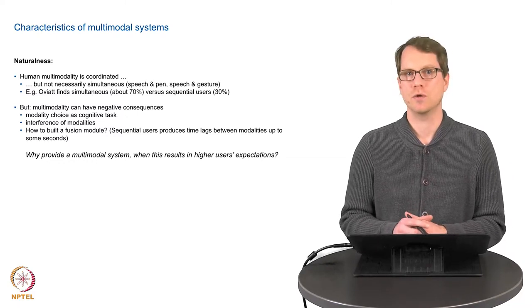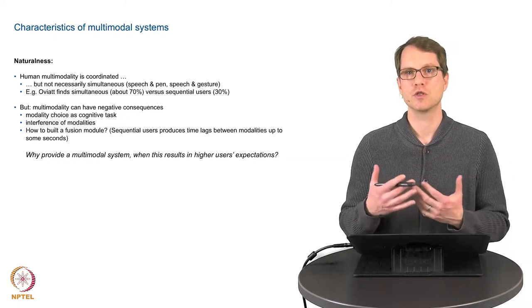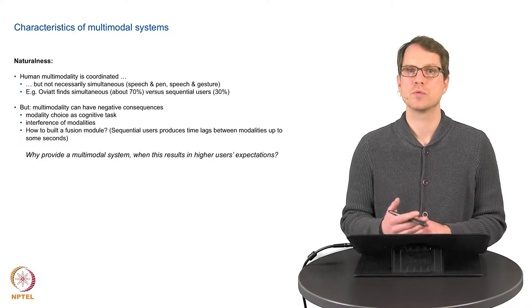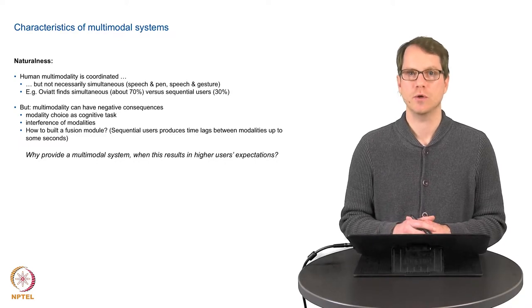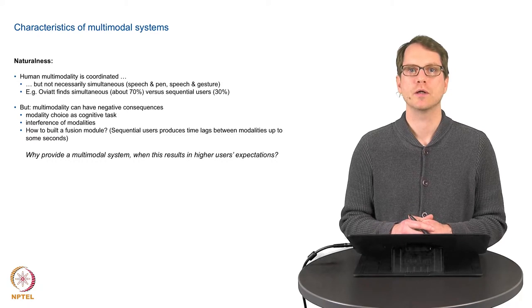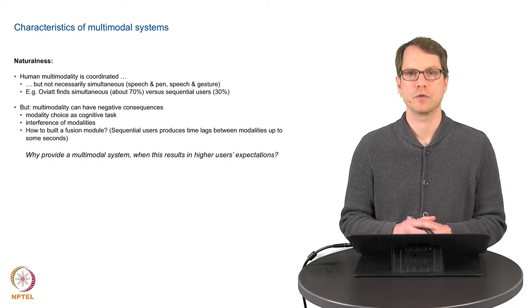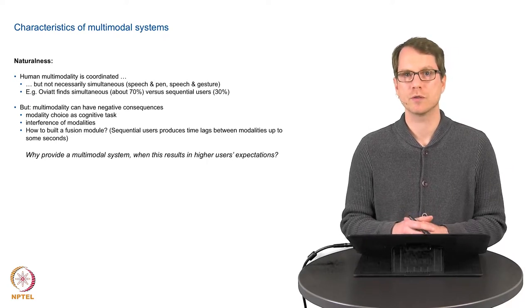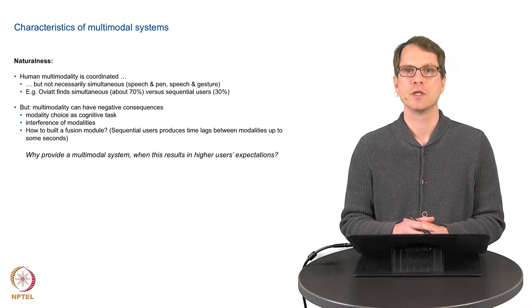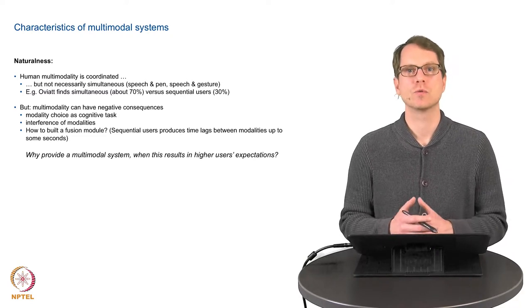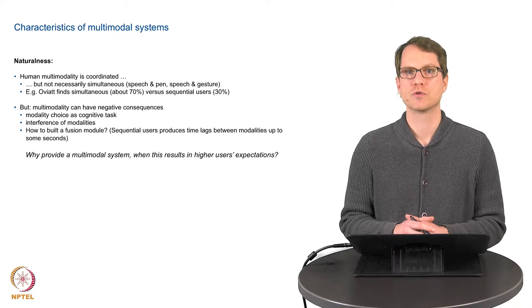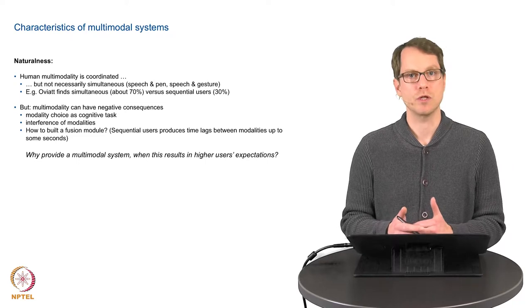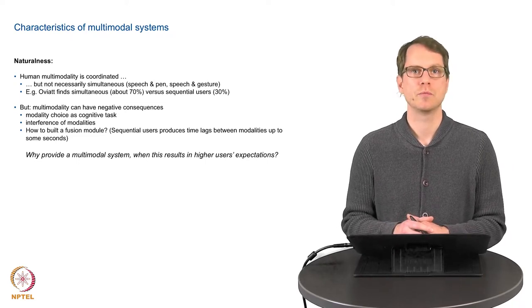Human interaction is coordinated. If we speak, do our head movements, do our hand movements, this is all temporally and semantically coordinated, but not naturally simultaneous. Sharon Ovyat, a pioneer in multimodal interaction, found that there are two kinds of user groups: users which use multimodal input sequentially and those who do this in parallel simultaneously.